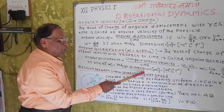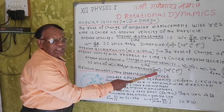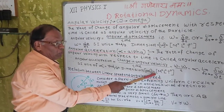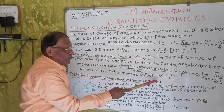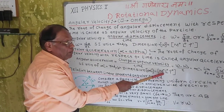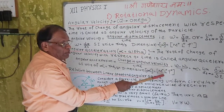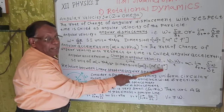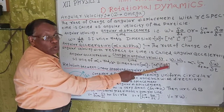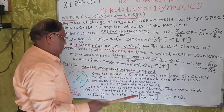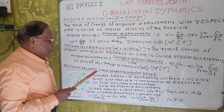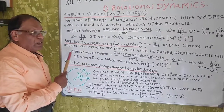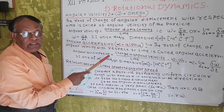The dimensional formula of angular acceleration is: [alpha] equals [M to the power 0, L to the power 0, T to the power minus 2]. Angular acceleration is a vector quantity.